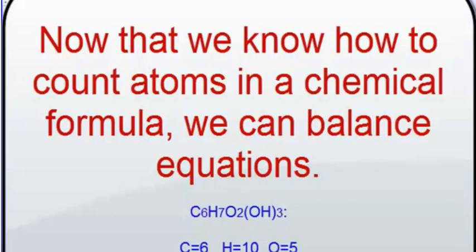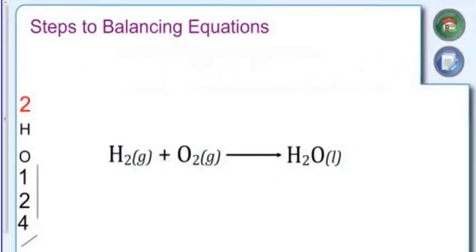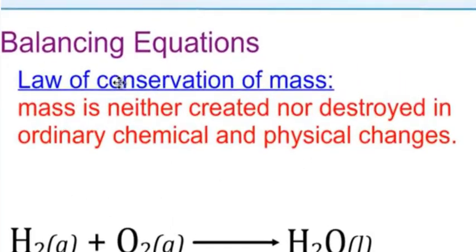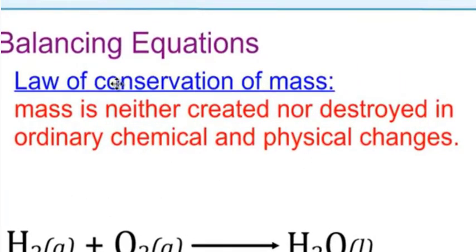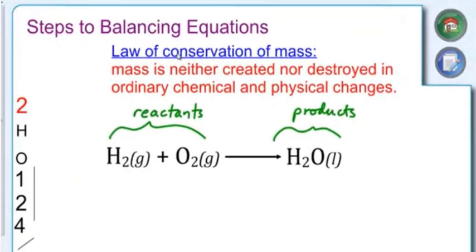So now we're going to apply what we know about counting atoms to balancing equations — the steps to balancing equations. The first thing that we need to know is the law of conservation of mass, which basically says that you can't create or destroy mass. Whatever you start off with on the reactant side — remember, this side right here is your reactants — and this side over here is your products. And whatever you start with on the reactant side, you have to finish on the product side.